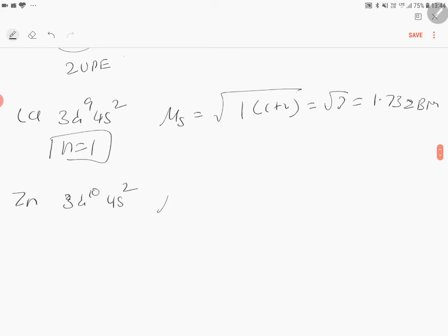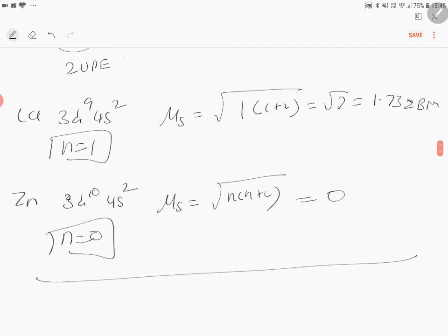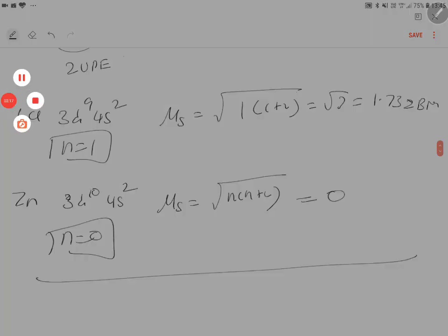Last will be zinc 3d10 4s2. Spin-only magnetic moment equals square root of n into n plus 2. No unpaired electrons, therefore spin-only magnetic moment is 0. This is very important and crucial for you to understand. From this, a lot of questions can come.